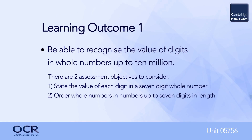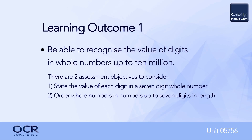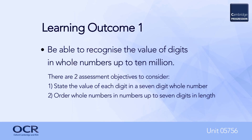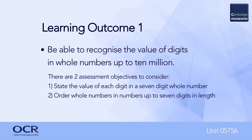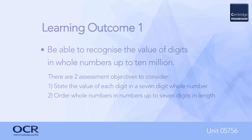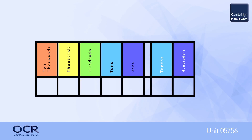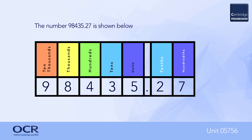Learning outcome number one involves recognising the value of digits in whole numbers up to ten million. There are two assessment objectives to consider: stating the value of each digit in a seven-digit whole number, and ordering whole numbers up to seven digits in length. To achieve this, learners must understand the place value system, including decimal numbers as shown on the slide: 98,435.27.